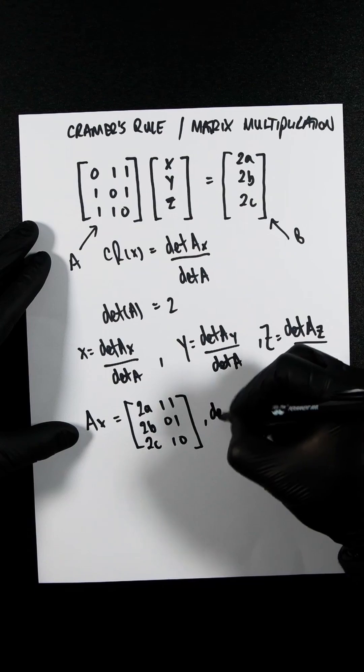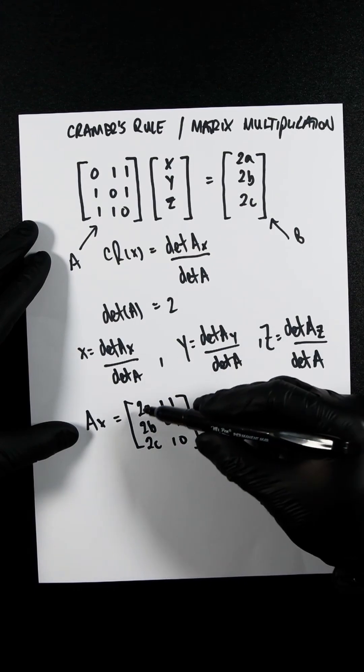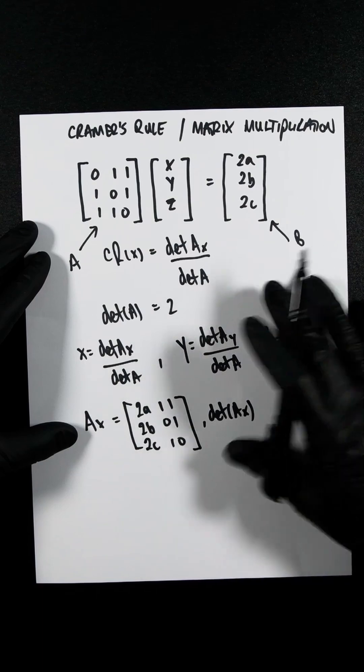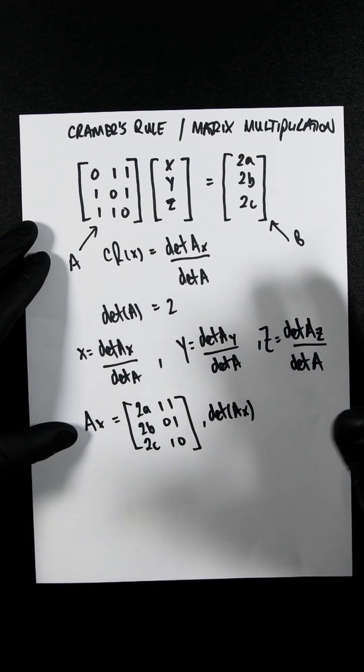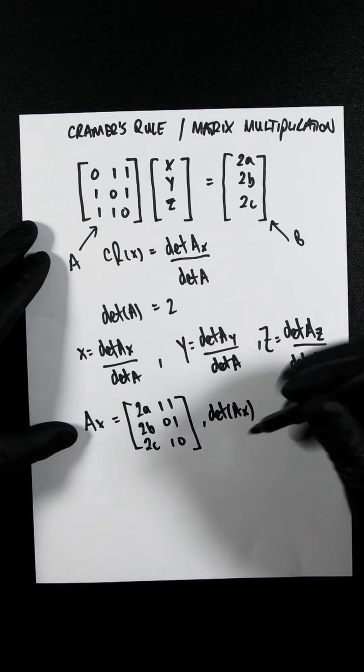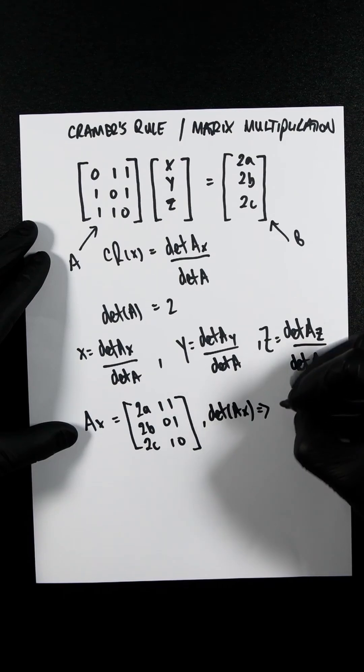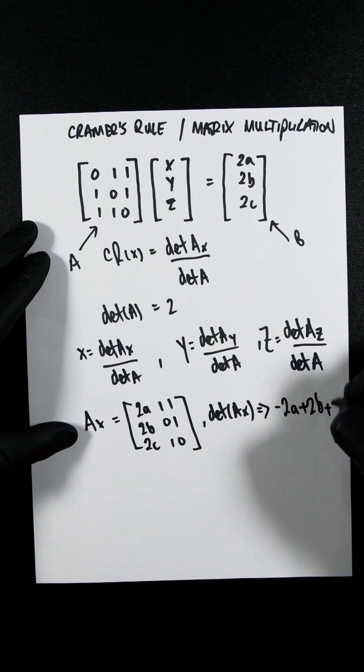So determinant of Ax, again, this is a 3x3 matrix. I've got an entire video on how to find the determinant of a 3x3 matrix. But the determinant of Ax would be minus 2A plus 2B plus 2C.